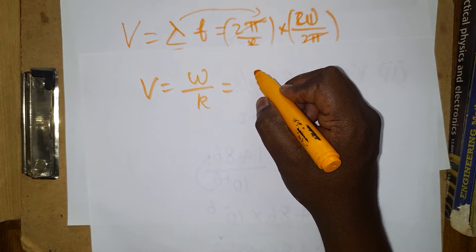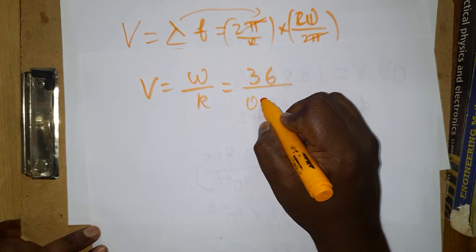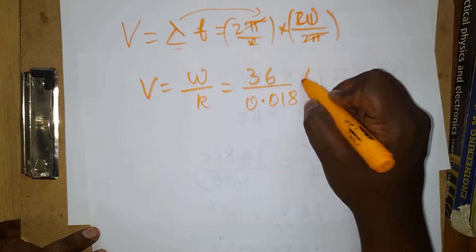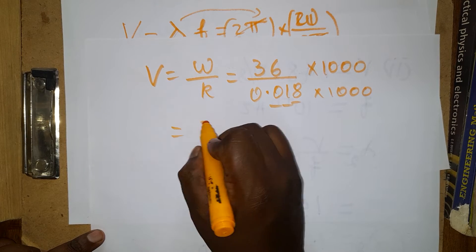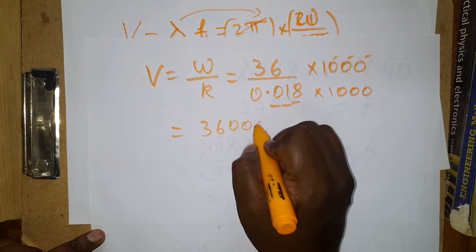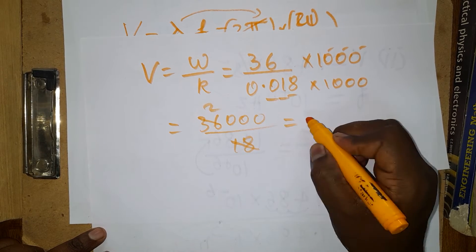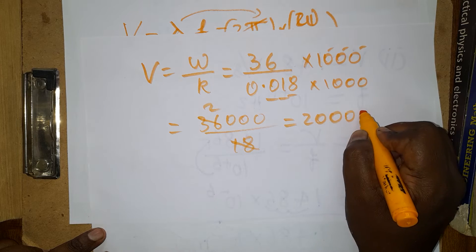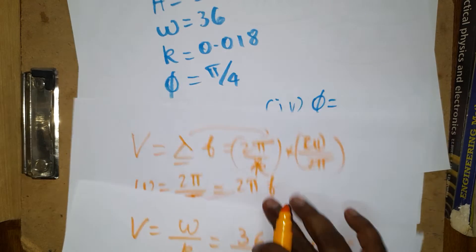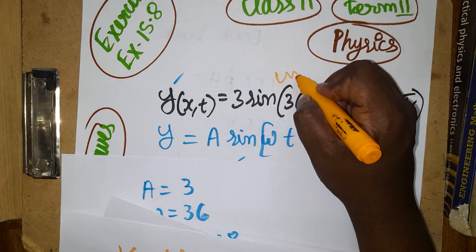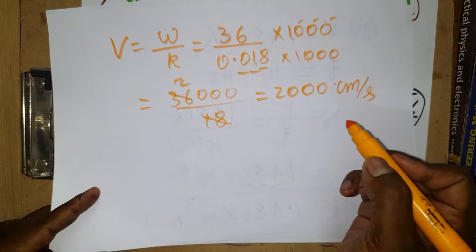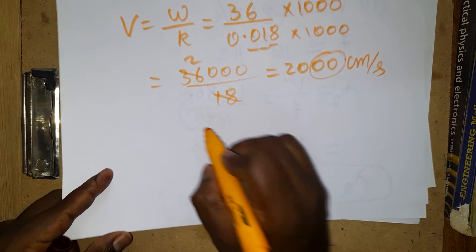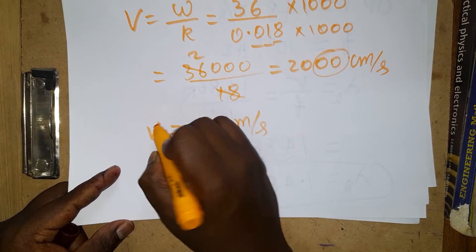So velocity = ω/k. Substituting values: ω = 36 and k = 0.018. This gives 36/0.018 = 36000/18 = 2000. Since the equation uses centimeters, this is 2000 cm/s. Converting to meters: 2000 cm/s ÷ 100 = 20 m/s. So the velocity is 20 m/s.